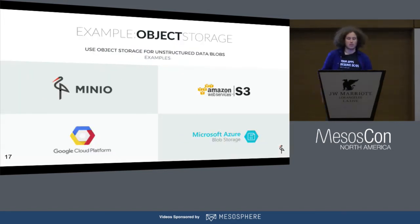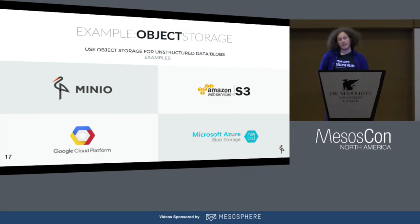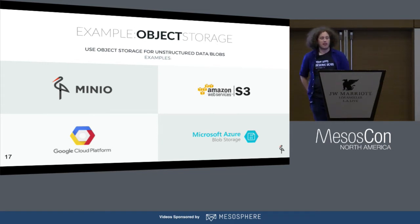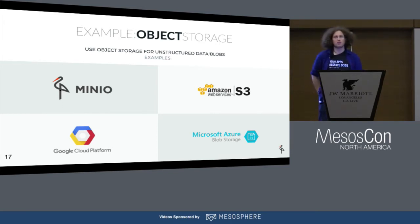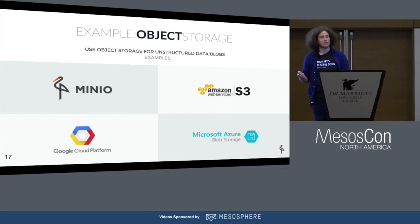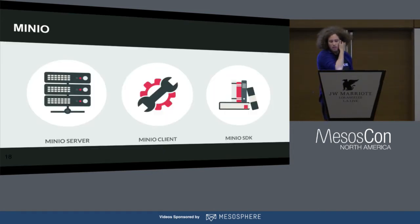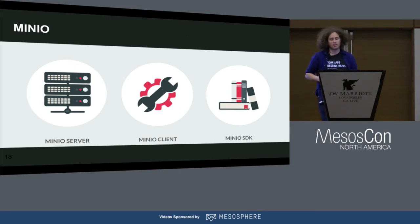Looking at object stores — talking about Minio here — all big cloud providers have a solution, and I personally like Minio because it's API-compatible with both GCE and S3. So I can use the same programs and APIs I use to write data to S3 on my local cluster as well. Minio consists of the actual service which stores the data, the Minio client for writing data similar to an S3 client, and the SDK for writing applications against it.